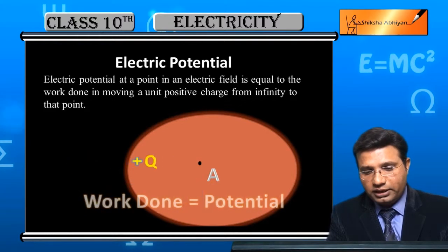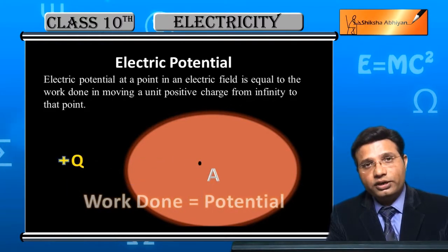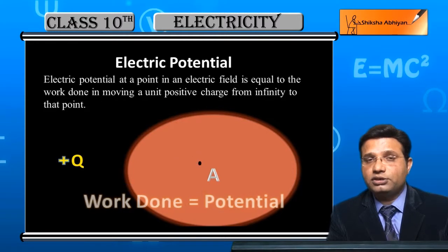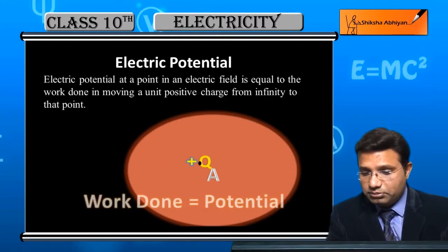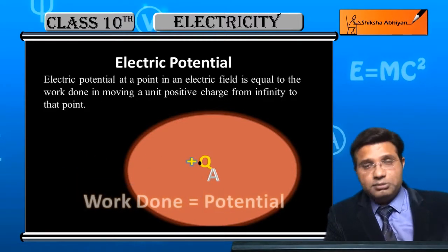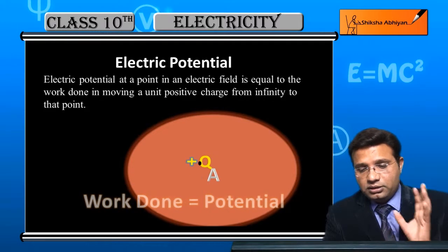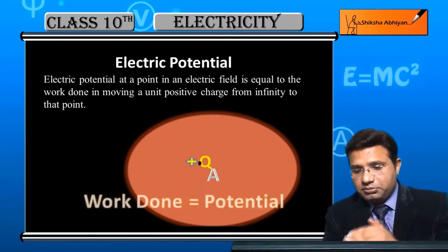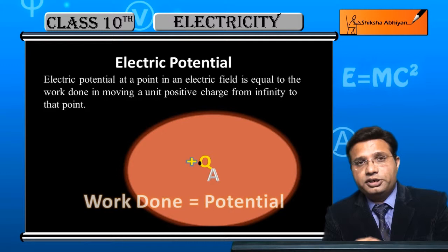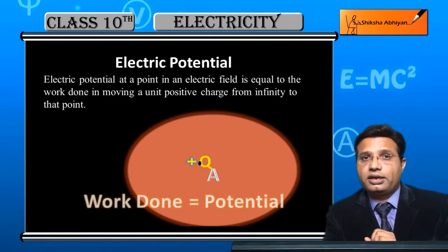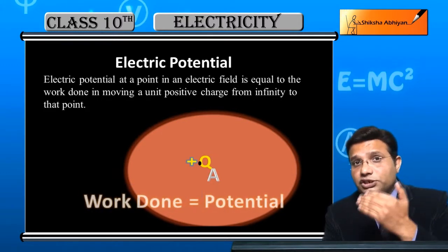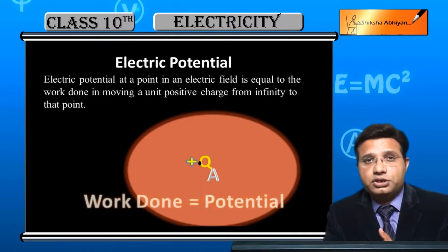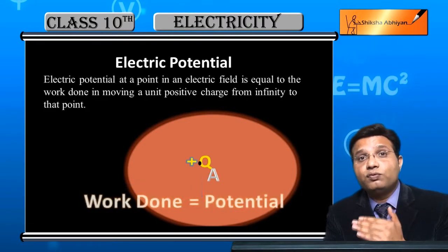The movement is carried out, and the work done becomes equal to the electric potential. Suppose we did 5 joules of work — on that basis we say that much potential exists at that point. The unit of electric potential is volt.